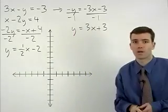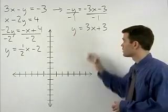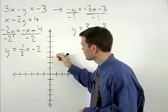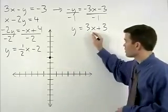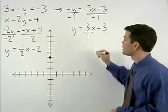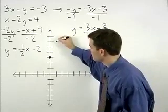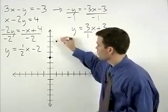Now we're ready to graph our lines. For our first line, we have a y-intercept of 3 and think of our slope as 3 over 1. So we go up 3 and to the right one to plot a second point.